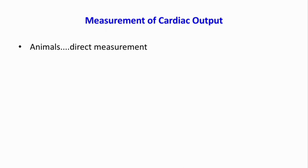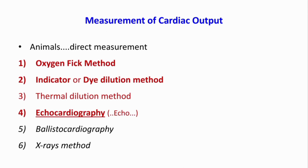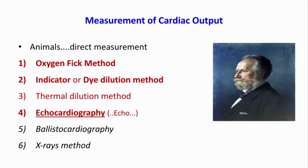There are different methods for measuring cardiac output. In animals we can measure it directly by passing a catheter. But in humans we use different methods like the oxygen Fick method, indicator or dye dilution method, thermal dilution method, echocardiography, ballistocardiography, and X-ray method. The last two methods are obsolete nowadays, and the most commonly used method, which is non-invasive, is echocardiography.